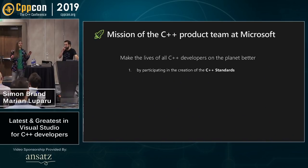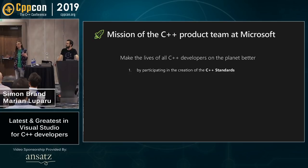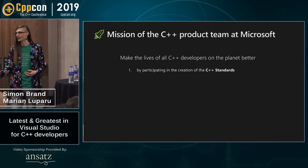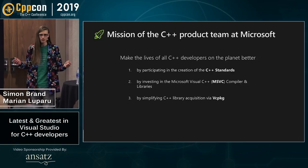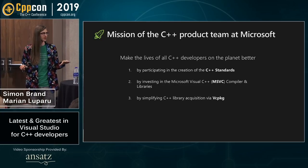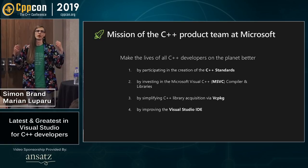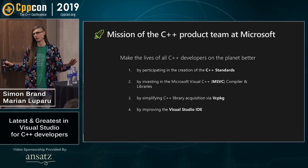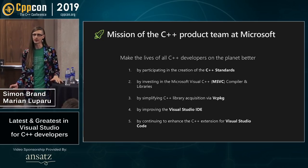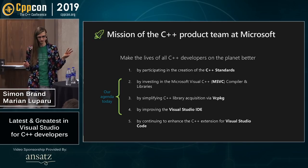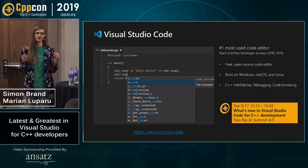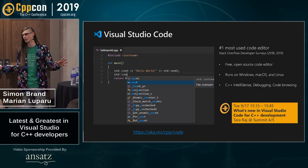This is the mission of our team at Microsoft. We want to make the lives of all C++ developers better — not just people using our tools, but everyone. We participate in the standards, invest in our MSVC compiler and libraries, simplify library acquisition with VCPackage, and work on our IDE. We're also working on Visual Studio Code. Today we'll cover items two, three, and four. For Visual Studio Code, come to Tara's talk tomorrow.